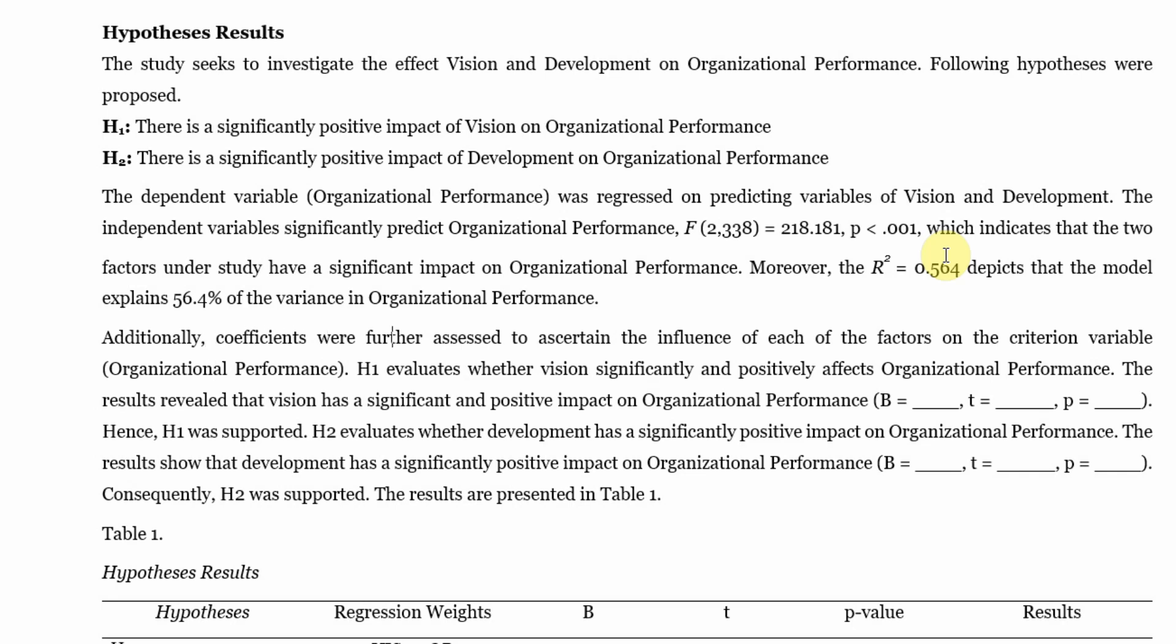This variance is being explained by the two predictors, vision and development. Additionally, you assess the two predictor variables and its impact on the criterion variable of organizational performance. H1 evaluates whether vision has a significant impact on OP and the results do reveal a significant impact.